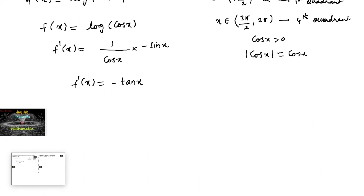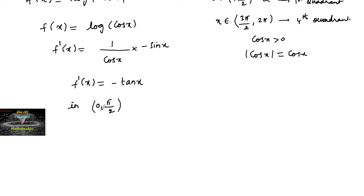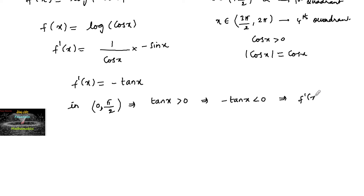In the first quadrant, for x belonging to (0, π/2), tan x is positive. So minus tan x will be negative, that is f'(x) is negative. Therefore, in (0, π/2), f is decreasing.